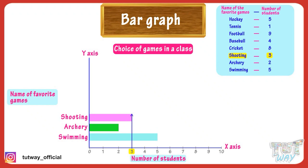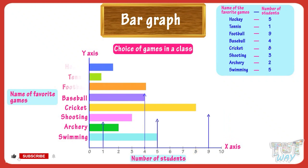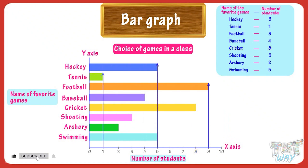It's given that 8 students like cricket the most, so make a rectangular bar on the y-axis up to the mark of 8, and label it with cricket. Similarly, we can draw bars for all the games, and our graph will be ready.